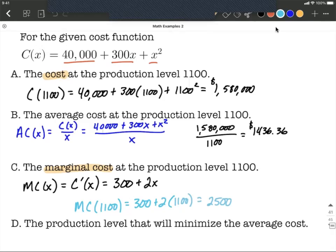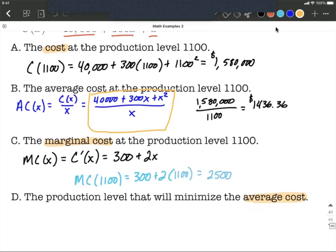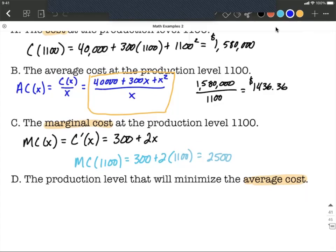Next we want to find the production level that's going to minimize our average cost. So to find this what we're going to do is we're going to use the average cost function that we created in part B. So I'm going to bring this along. But what I'm going to do is I'm going to represent that average cost function as three separate individual fractions instead of one big fraction.